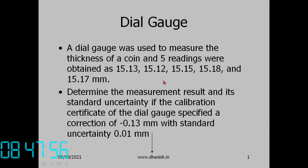This is the simplest concept of calibration. Previously there were no repeated readings, but now we have to mix up two different sources of uncertainty. We are measuring the thickness of a coin with repeated readings — there is some uncertainty — plus the calibration of the dial gauge has an uncertainty: a correction of minus 0.13 with standard uncertainty 0.01. So now we have two different types of uncertainty that we have to combine.